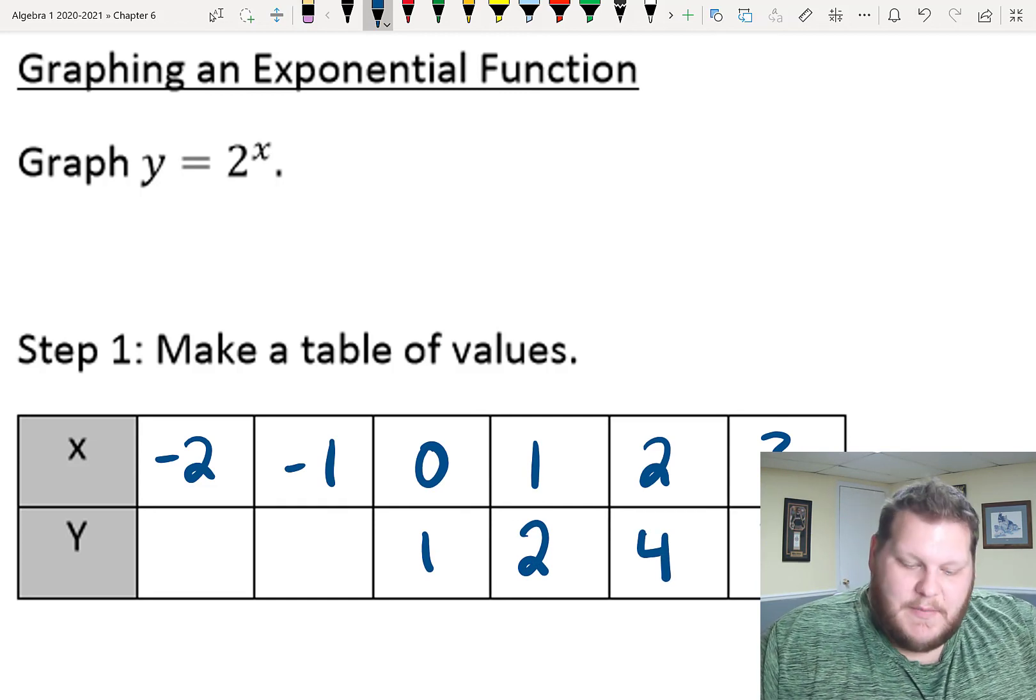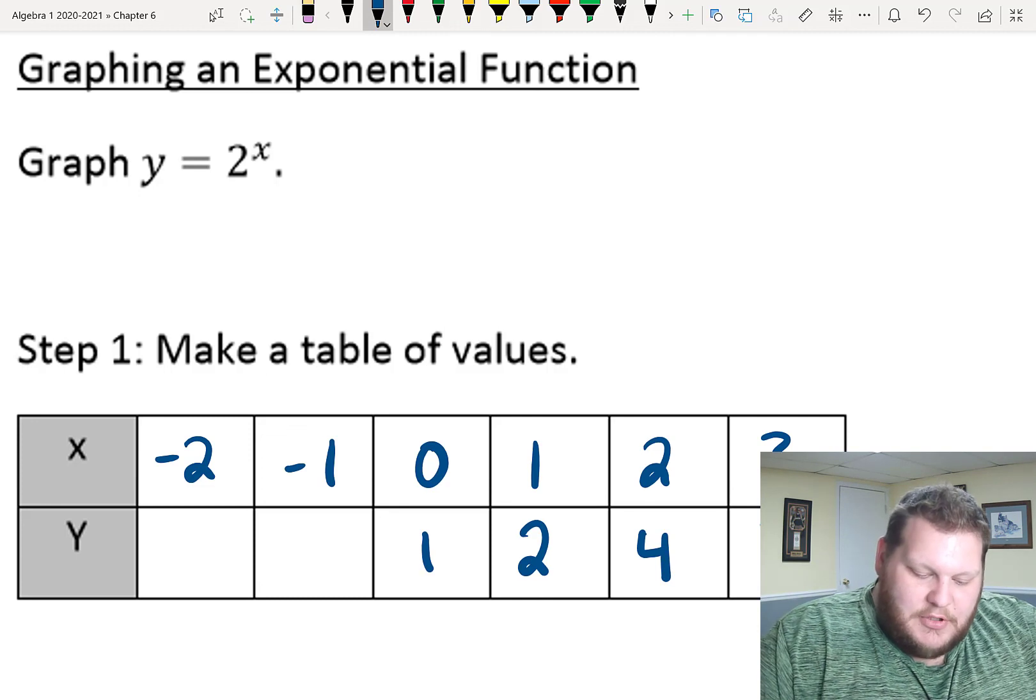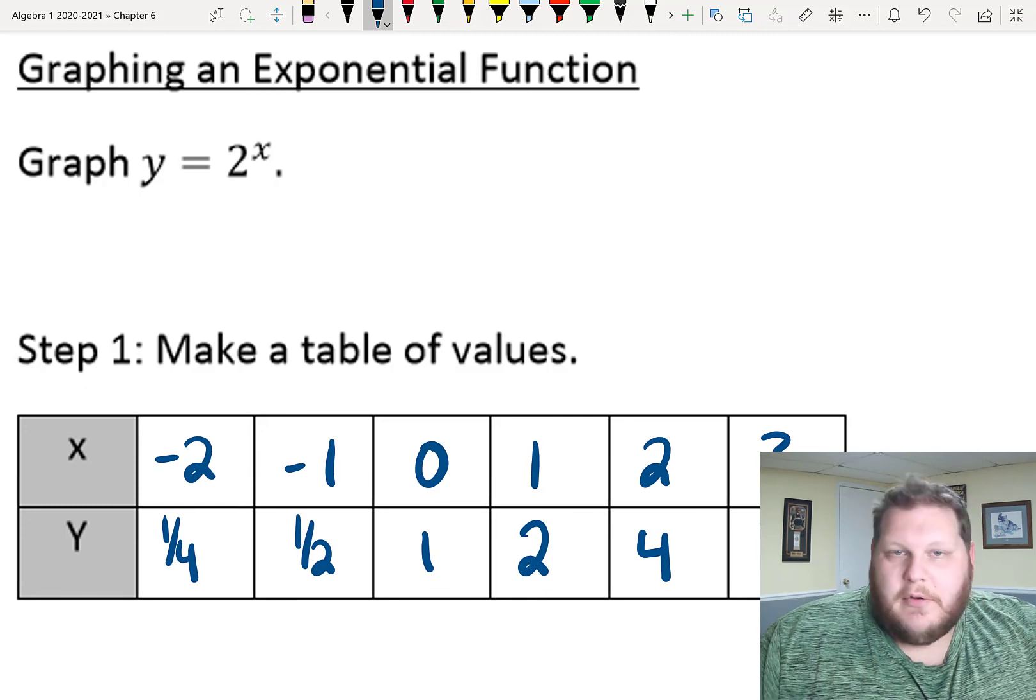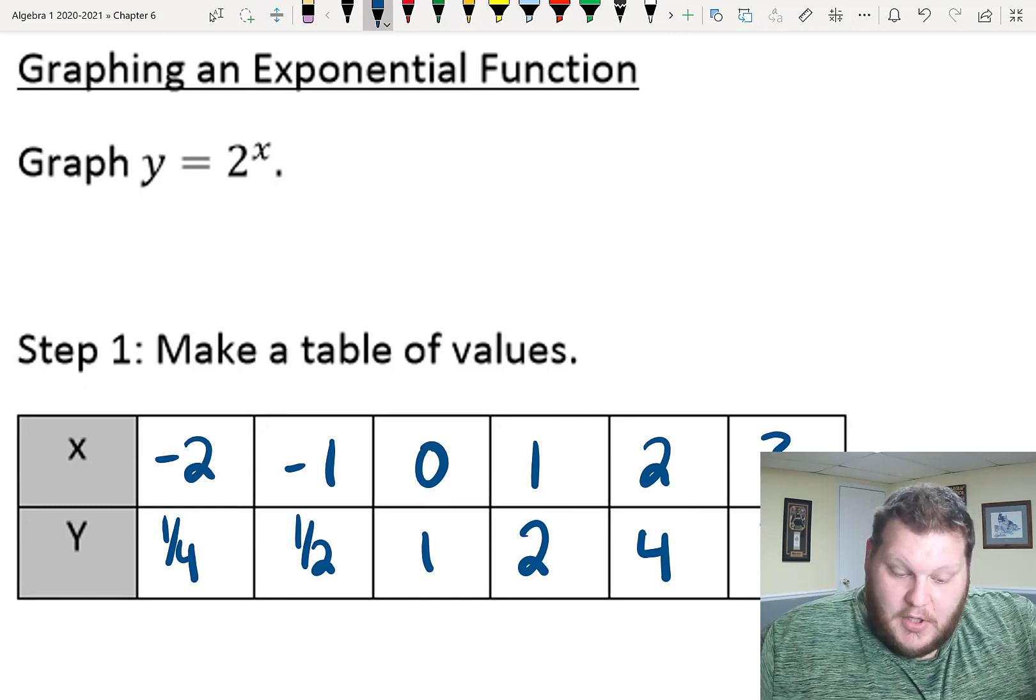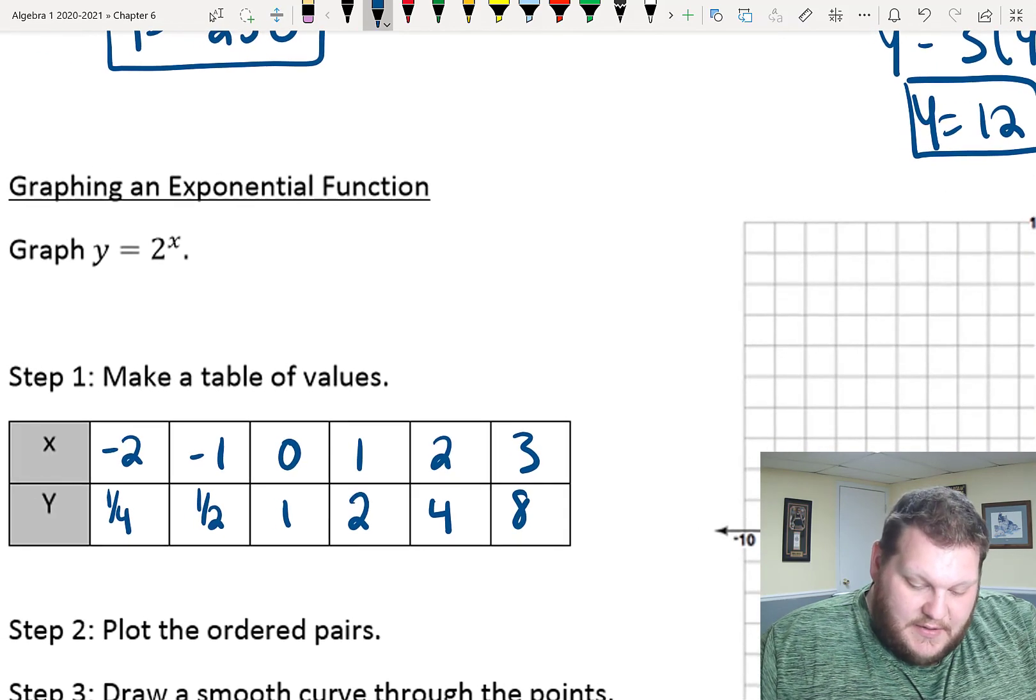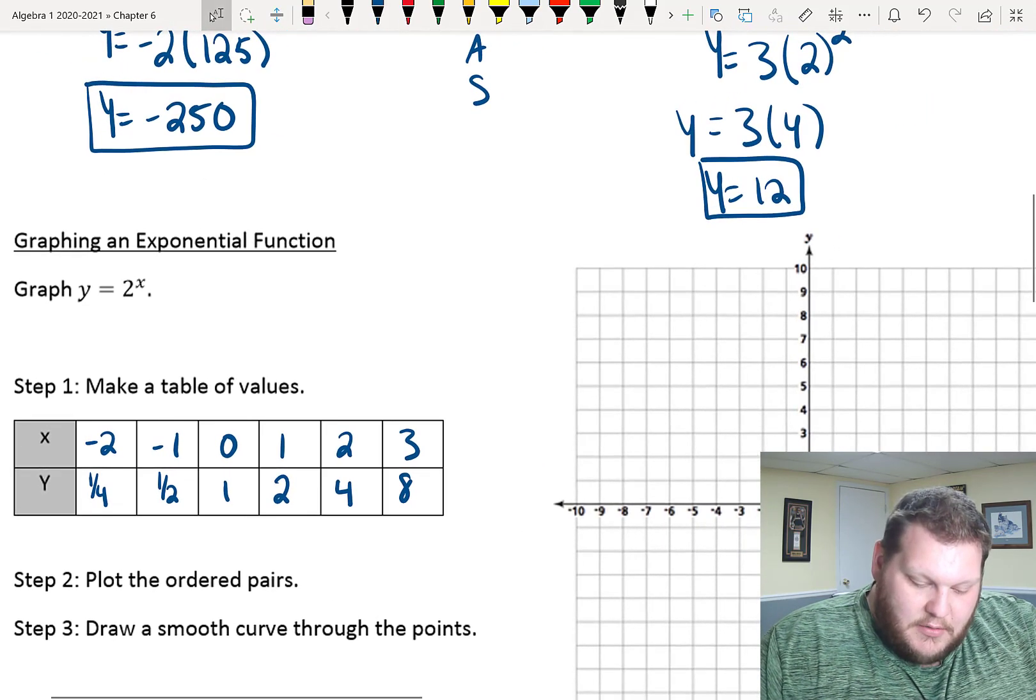So, we're backwards in my graph, we're backwards in my table. 2 to the negative 1st power is a half, 2 to the negative 2nd power is a fourth. So, I can go ahead and plot those points. I've got those 6 points that I can go ahead and graph.